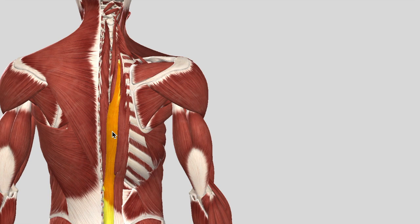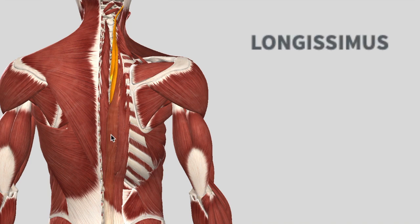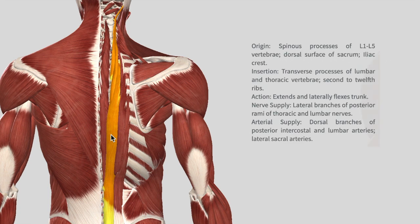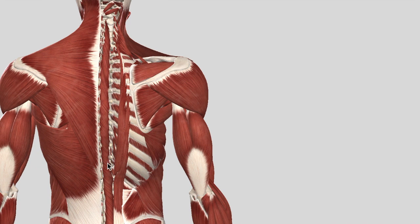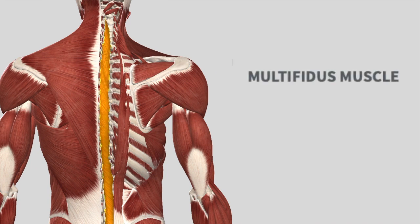In general, all three longissimus muscles have a common origin and common function. They start off at the spinous process of L1 to L5, with insertion at the transverse process of the lumbar and thoracic vertebrae, and the action is to extend and laterally flex the trunk.